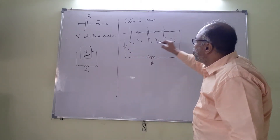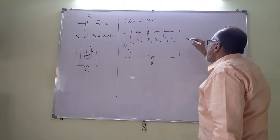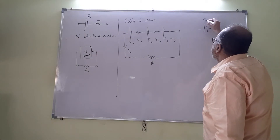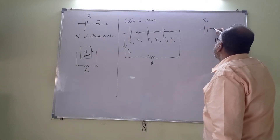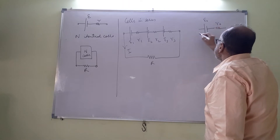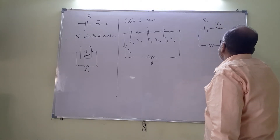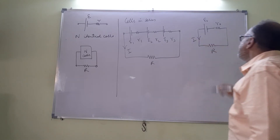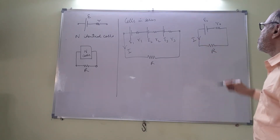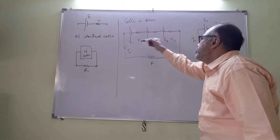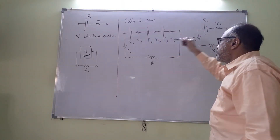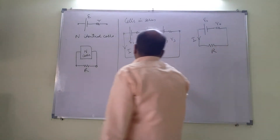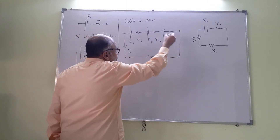We would like to know how all these cells can be replaced by a single cell of EMF E0 and a single internal resistance R0, delivering the same current I to the external resistor. So how are E0 related to E1, E2, E3 and how is R0 related to R1, R2 and R3? We apply Kirchhoff's law.